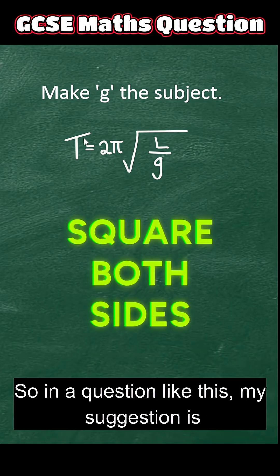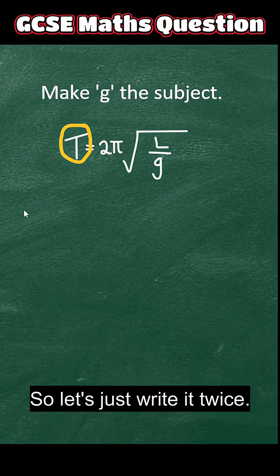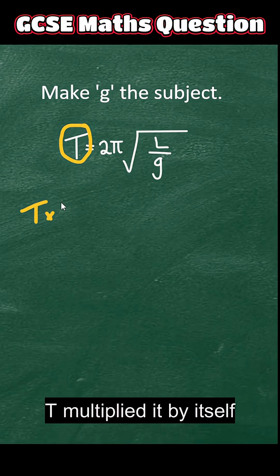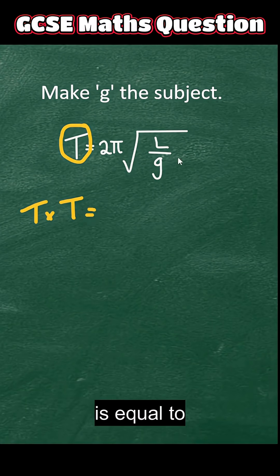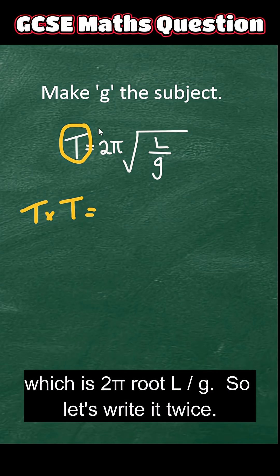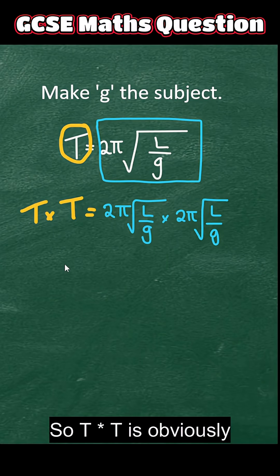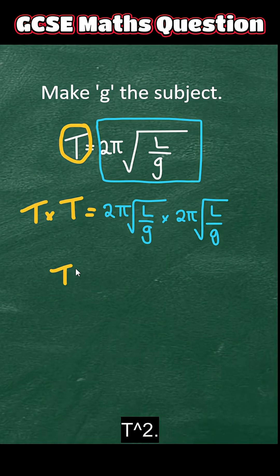So in a question like this, my suggestion is look at this thing here, t. So let's just write it twice. T multiplied by itself is equal to, look at the thing on the right-hand side, which is 2π root L over g. So let's write it twice. So t times t is obviously t squared.